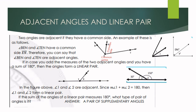Let us define adjacent angles and linear pair. Two angles are adjacent if they have a common side and common vertex, but no common interior points. For example, angle BEN and angle TEN have a common side of ray EN. Since these two angles have a common side, we can say that they are adjacent angles. Another example of adjacent angles is angle 1 and angle 2 — they have a common vertex and common side.